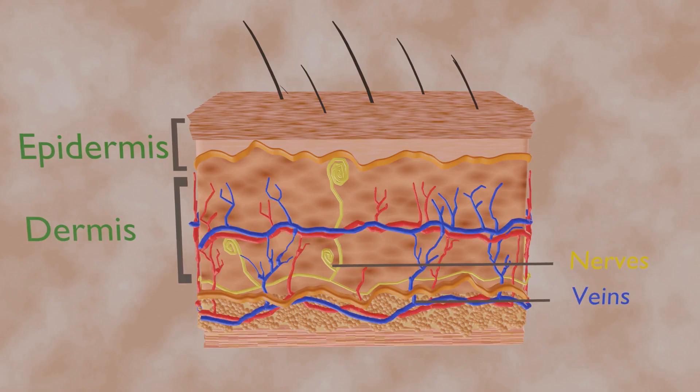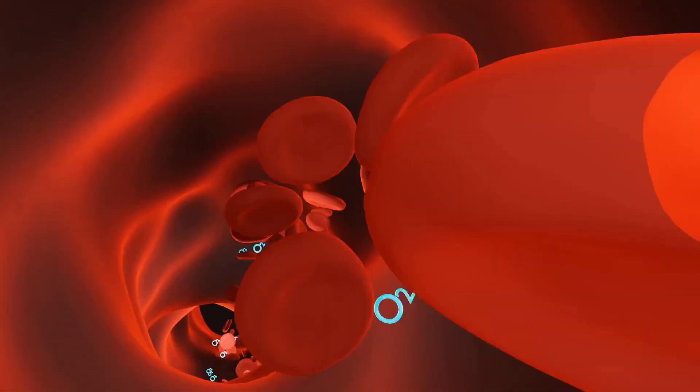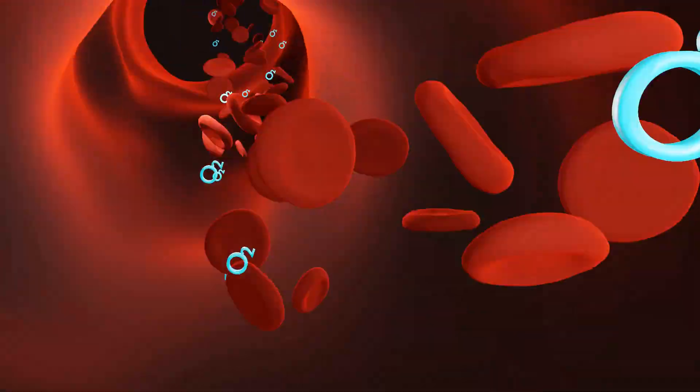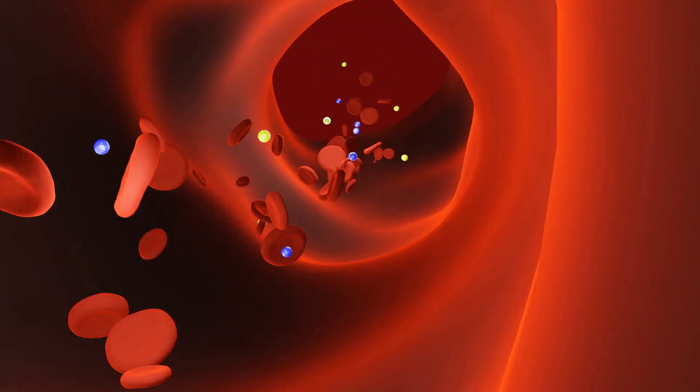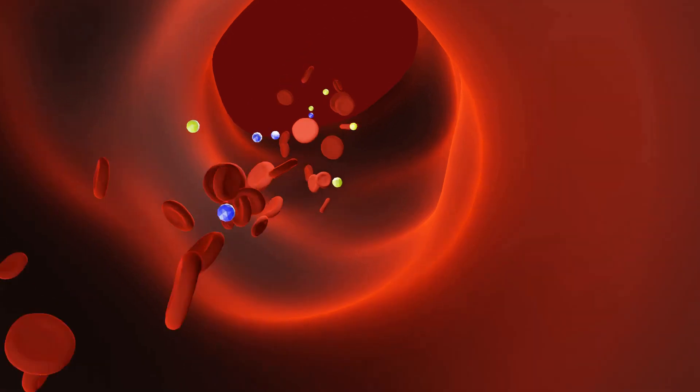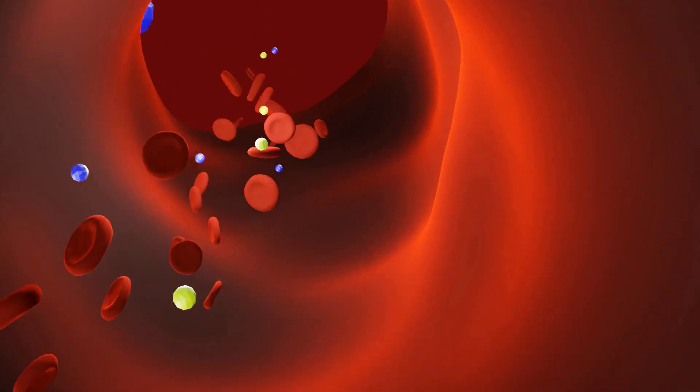Blood vessels supply nutrients and oxygen to the skin and take away cell waste and cell products. The blood vessels also transport the vitamin D produced in the skin back to the rest of the body.